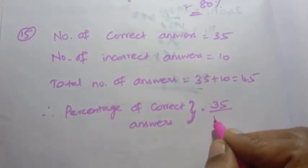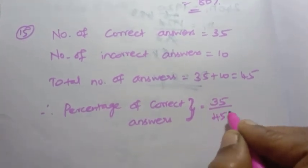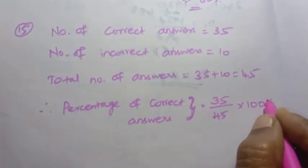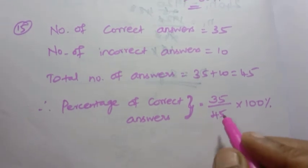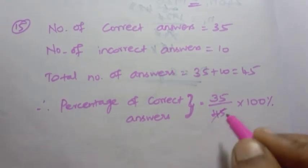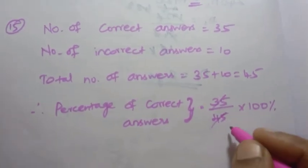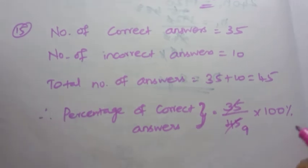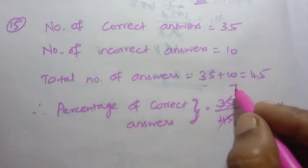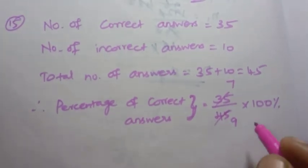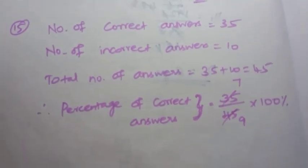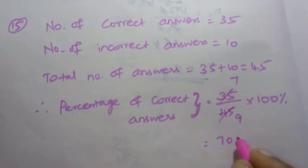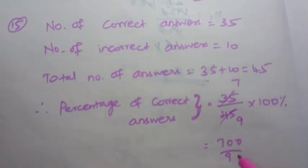35 by 45 into 100 percent. Let's simplify: 5 nines are 45, 5 sevens are 35. So this equals 700 by 9. Now divide 700 by 9.